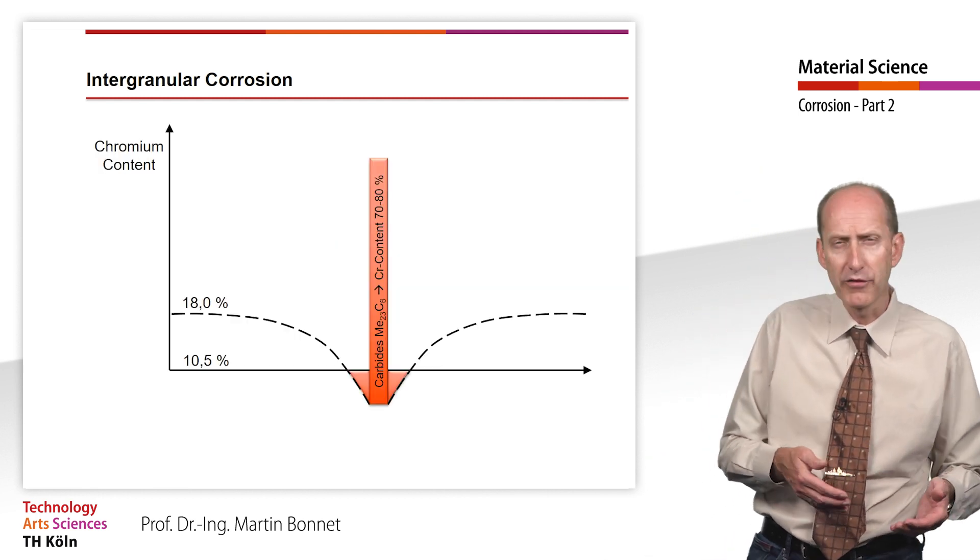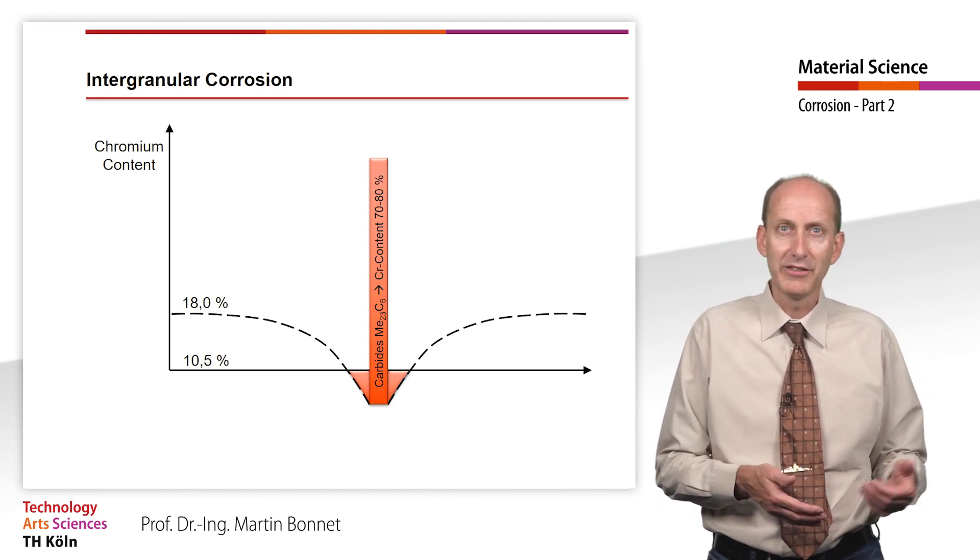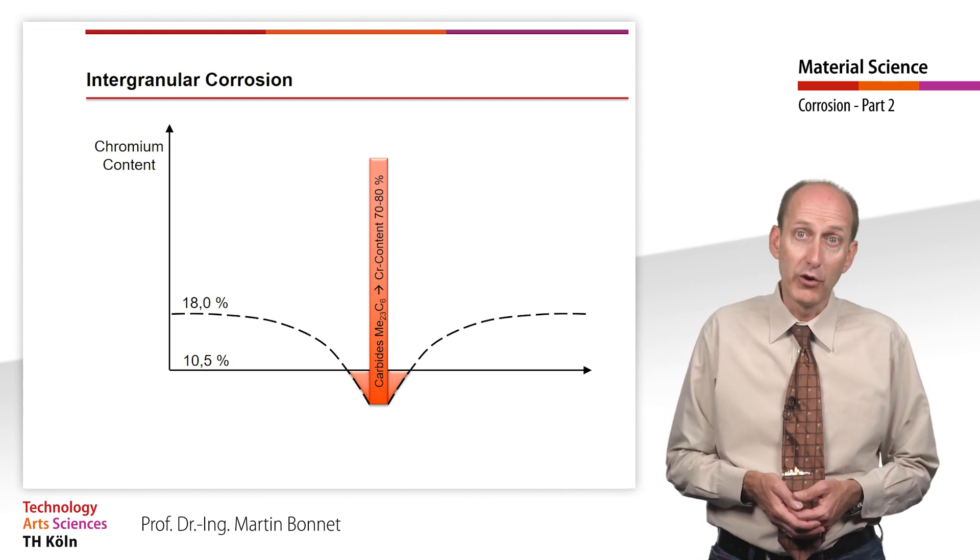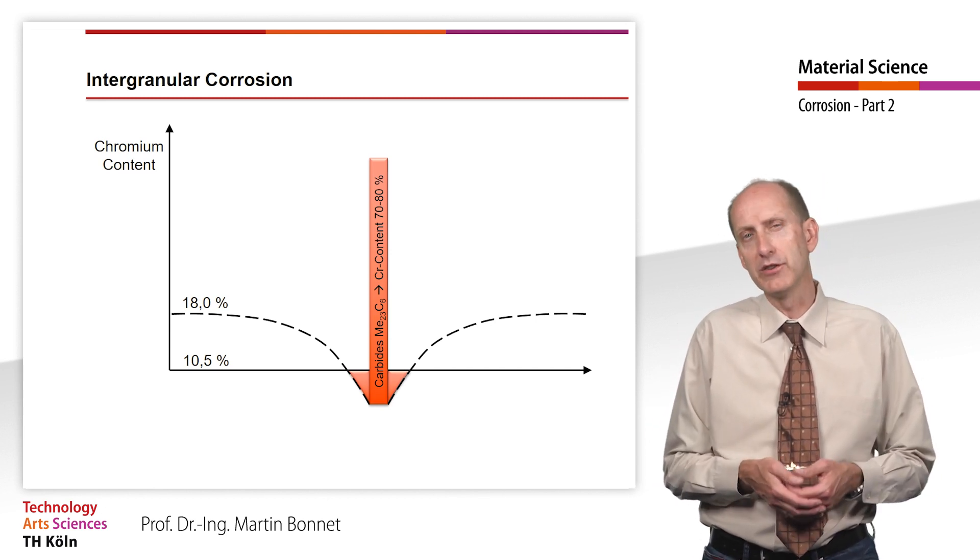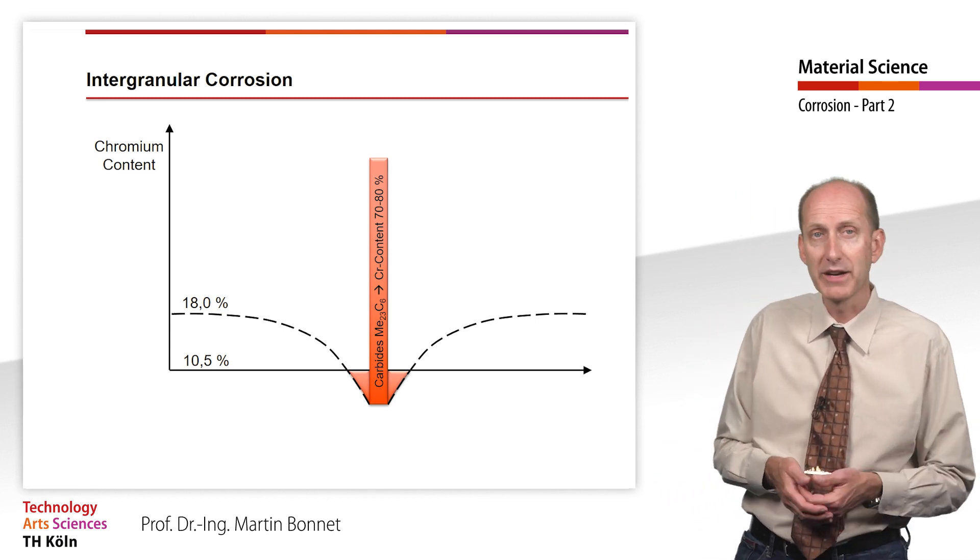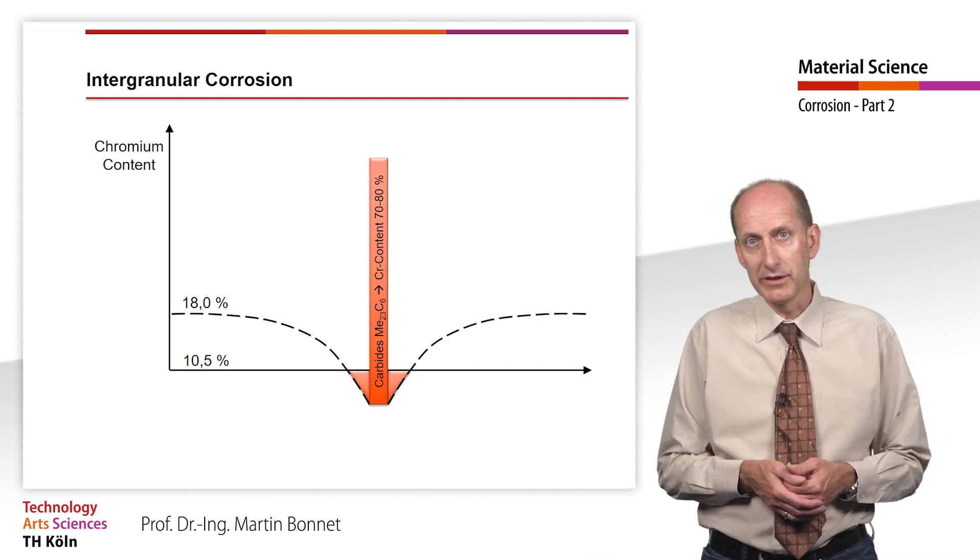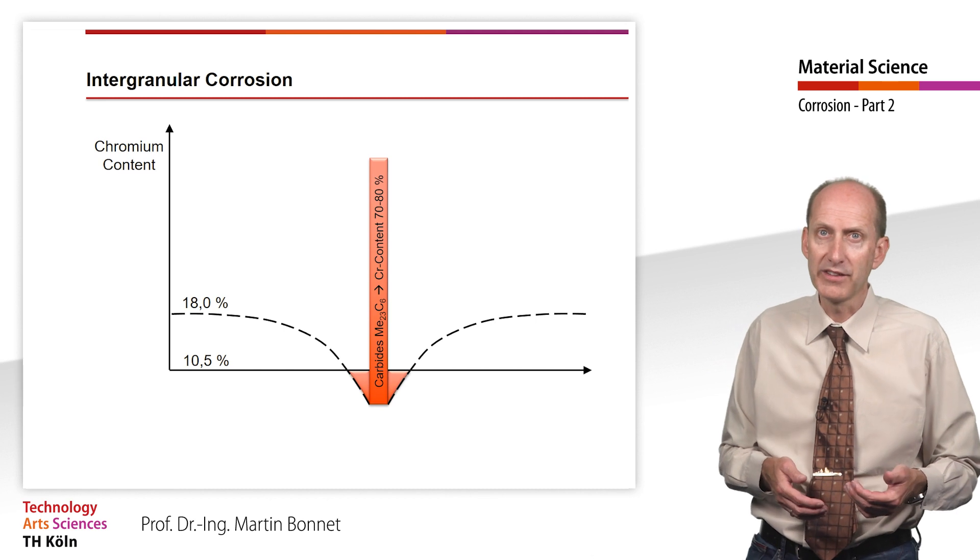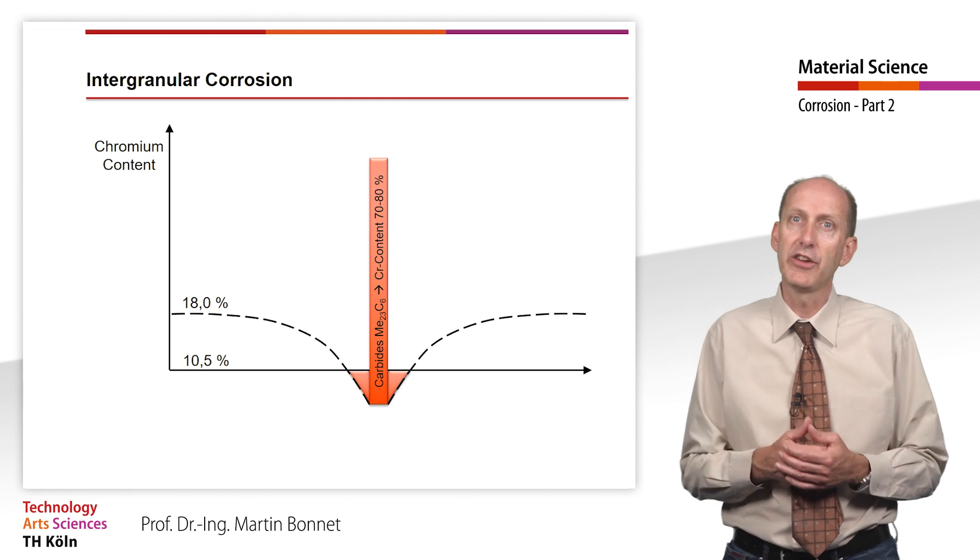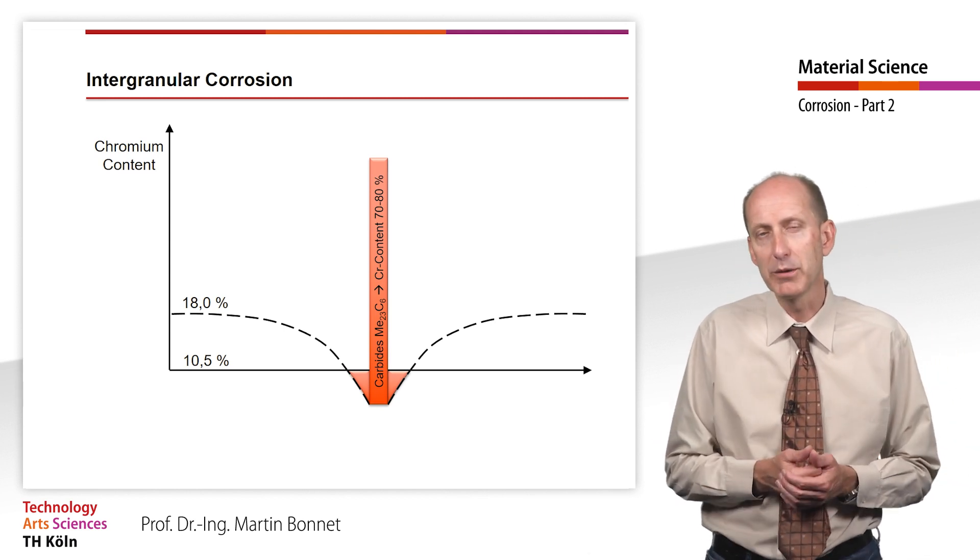Carbides consist of Me23C6. Me stands here first of all quite generally for metal, whereby it consists for the most part of chromium and in some of iron. Thus, the chromium content in these carbides is 70 to 80 percent. The immediate environment is thus correspondingly depleted in chromium and falls below the necessary chromium concentration for the formation of a stable passive layer.